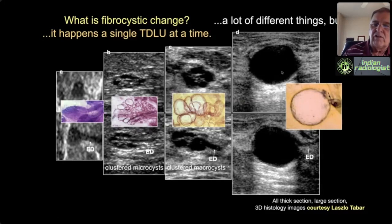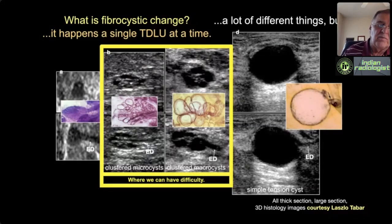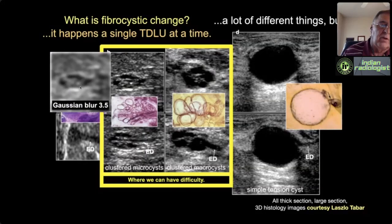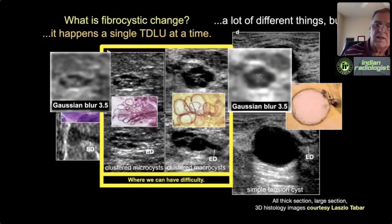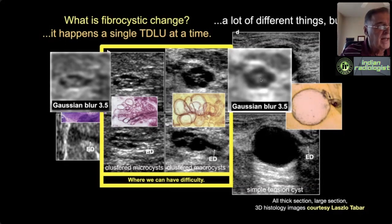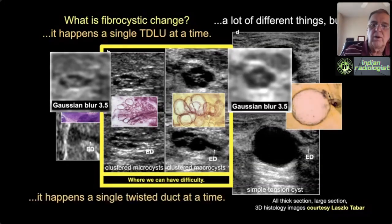We don't have trouble with normal TDLUs or simple cysts. But these in-between states of microcysts can cause problems because microcysts can be too small to resolve. If you volume-average white fibrous tissue with black microcysts, you get gray. I did a Gaussian blur in Photoshop and with lower resolution I can't resolve the microcysts—it looks like a solid isoechoic mural nodule or a thick septation. With lower-end, cheaper ultrasound machines you have less ability to resolve the microcysts, creating a falsely suspicious appearance of a complex cystic and solid mass.